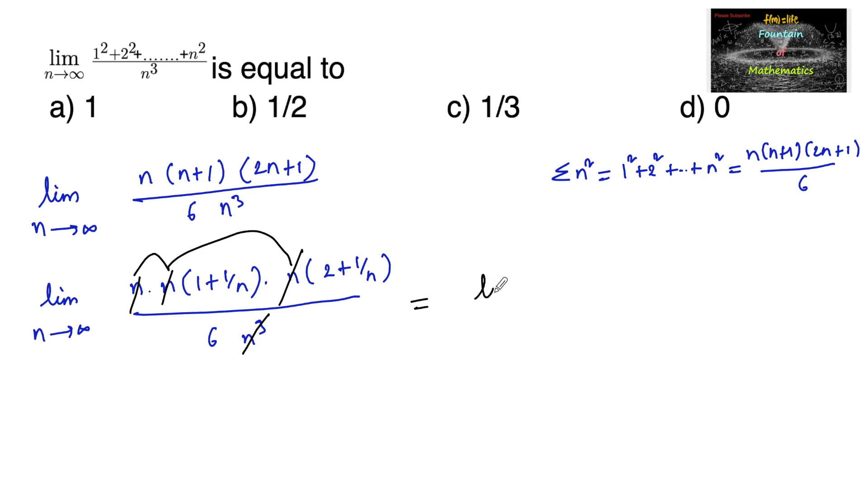So we have limit n tends to infinity 1 plus 1 upon n into 2 plus 1 upon n divided by 6, and also we know that as limit x tends to infinity 1 upon x is equals to 0. As x is approaching very large value, 1 upon x will tend to 0.